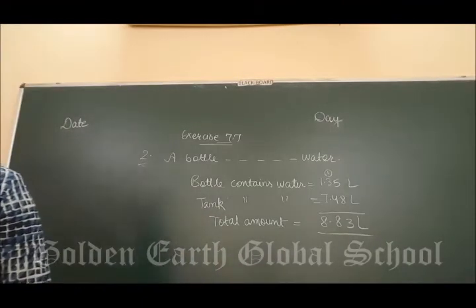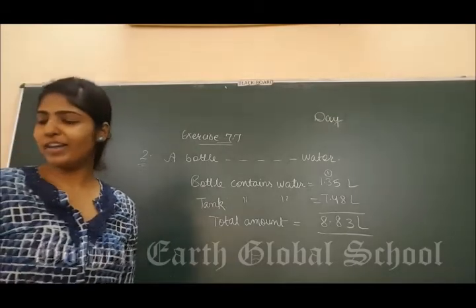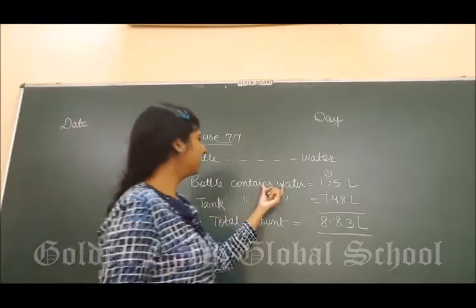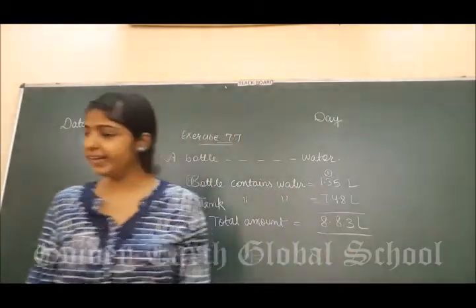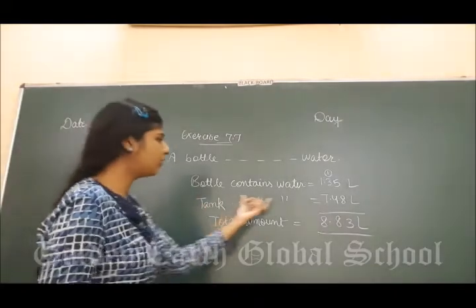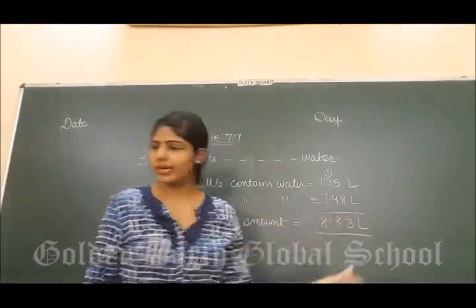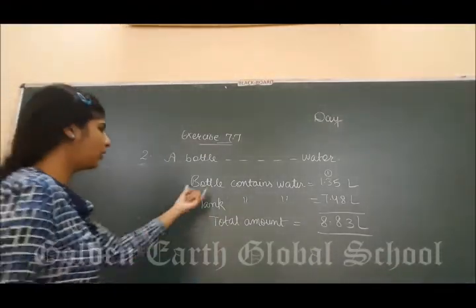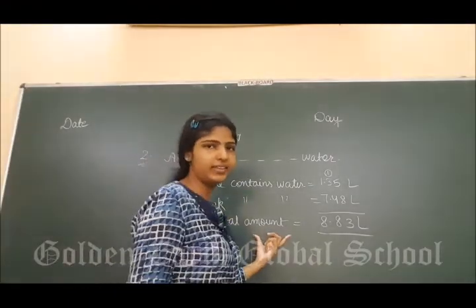Now, our next question is: a bottle contains 1.35 litre of water, and a tank contains 7.48 litre of water. What you have to tell? Find the total amount of water. Bottle and tank contains total amount of water.